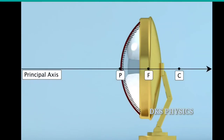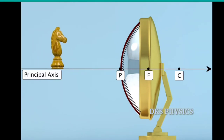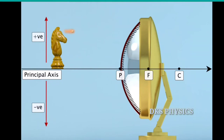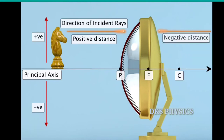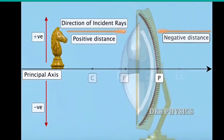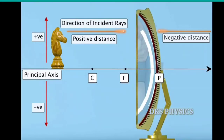The pole of the mirror is considered to be the origin, and all distances are measured from it. The object is always placed on the left of the mirror. Distances measured upward and perpendicular to the principal axis are positive; downward are negative. Distances to the right along the positive x-axis (in the direction of the incident ray) are positive, and distances to the left along the negative x-axis (opposite to the incident ray) are negative. These sign conventions apply to both concave and convex mirrors.